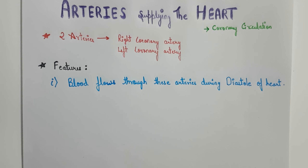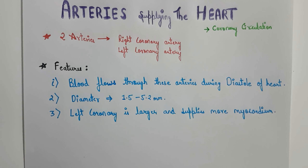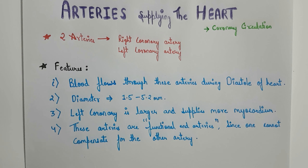The first feature of these coronary arteries is that blood flows through them during diastole of the heart, not during systole. The diameter of these arteries ranges between 1.5 mm to 5.2 mm. The left coronary artery is larger and supplies more myocardium — the muscular layer of the heart composed of cardiac muscles. These arteries are functional end arteries, since one cannot compensate for the other, though their branches anastomose with each other.